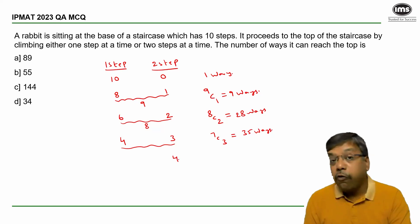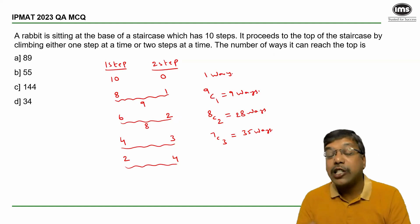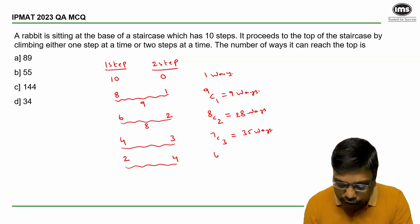If the rabbit makes four jumps of two steps each, it covers eight steps, and then it has to make two jumps of single step each. So a total of six jumps rather. Out of these six,